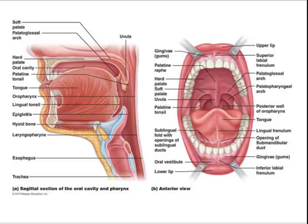The tongue is composed of interlacing bundles of skeletal muscle. Intrinsic muscles of the tongue are confined to the tongue and adjust its shape, while extrinsic muscles anchor to the skull and adjust the tongue's position. The tongue grips the food and mixes it with saliva to form a moist mass called a bolus. It initiates swallowing by forcing the bolus into the oropharynx. The lingual frenulum is the fold of tissue that anchors the tongue to the floor of the oral cavity.